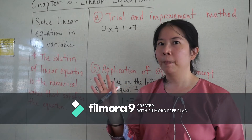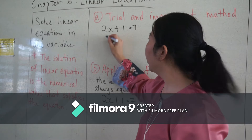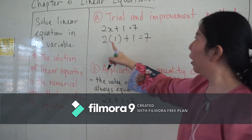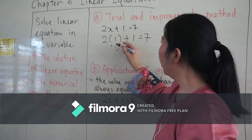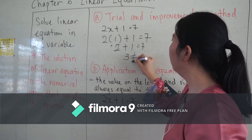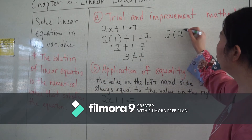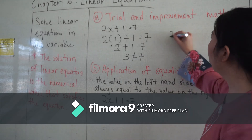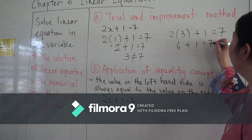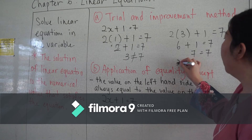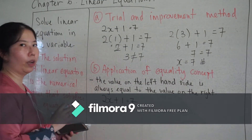That is how we determine this is a linear equation in one variable — only one type of variable, which is x. For the trial and improvement method, I try substituting x as one. I calculate and find the answer is not equal to seven, so one is not the answer. I then try a larger number, and I find they are equal, so x equals three.